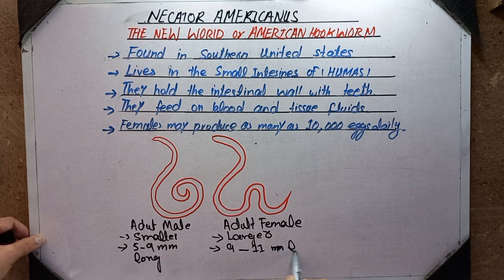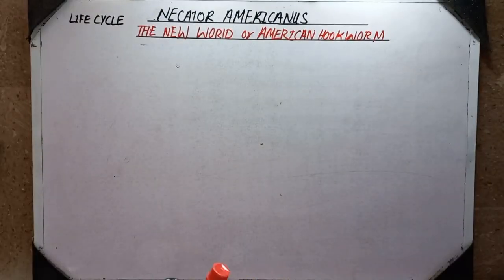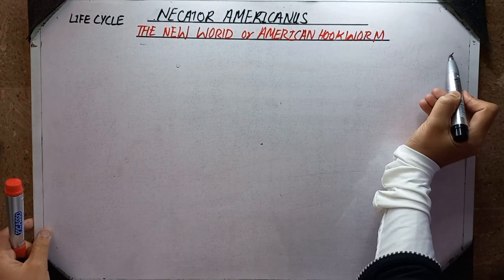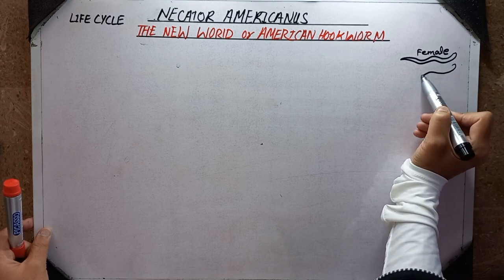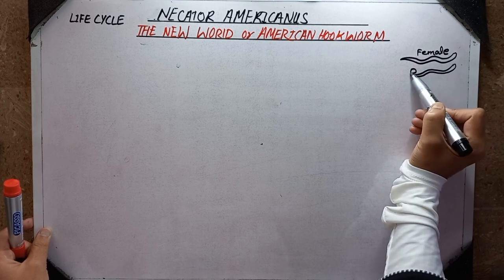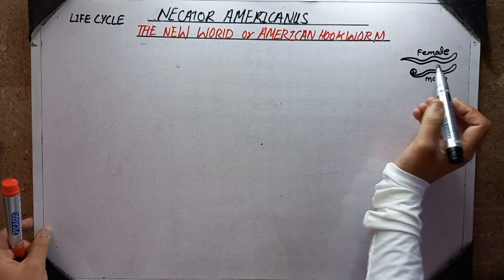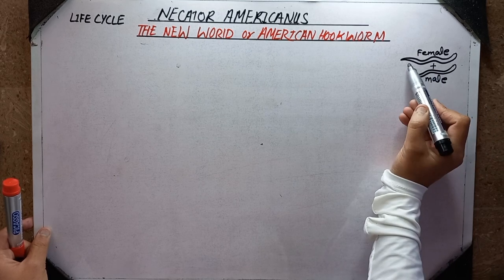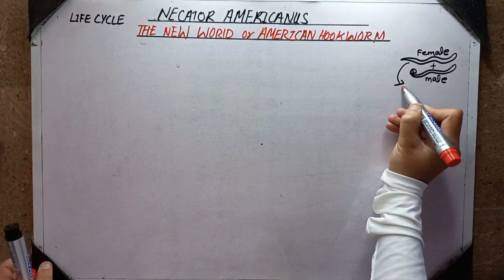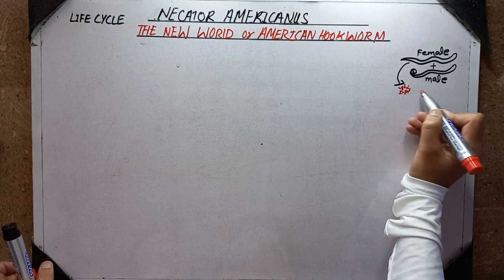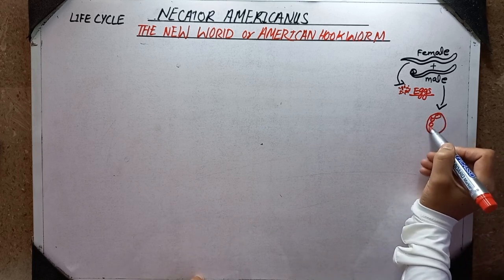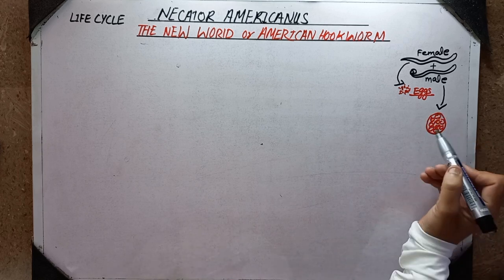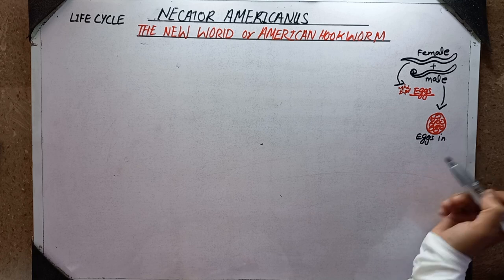Now I am going to draw the life cycle of the hookworm. This is the female hookworm and this is the adult male hookworm. Male and female hookworms mate with each other and the female produces a large number of eggs. These eggs are then passed out from the human body with their feces and migrate to the external environment.